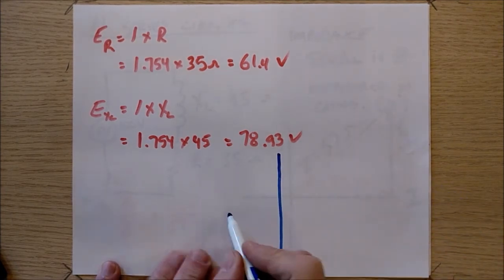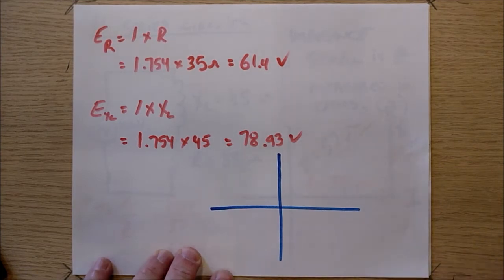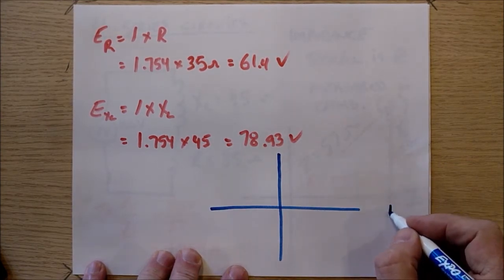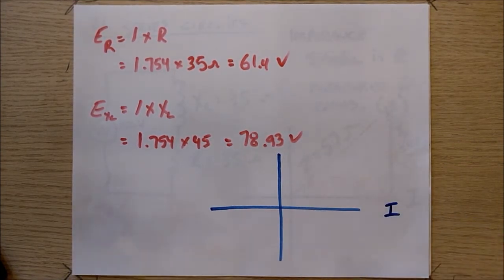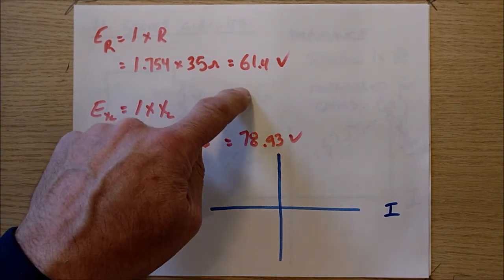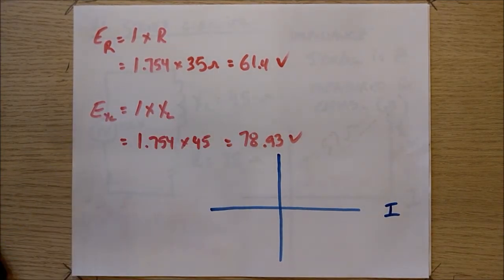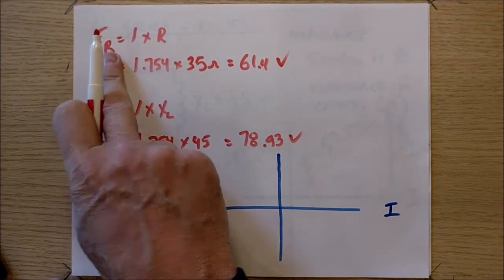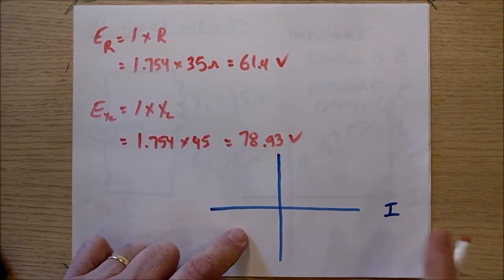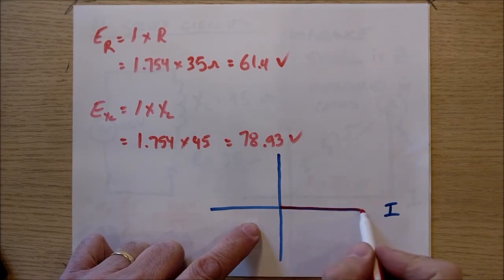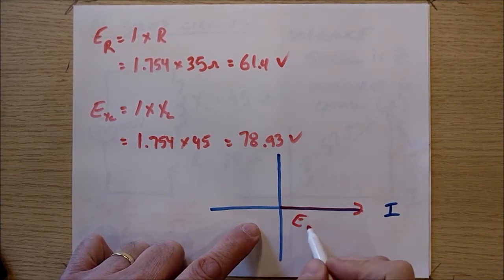Here's my little phasor world. Once again, we're going to compare our phasors to the current. I'm going to draw this 61.4 volts as a phasor. And since it's a resistor, it's going to be in phase with the current. And so I'm going to draw it right here. This is what we call ER. It is 61.4 volts.